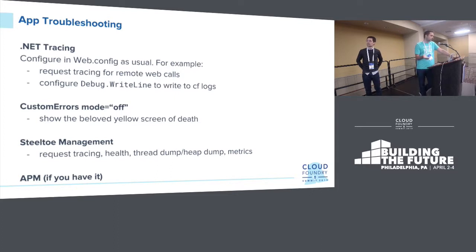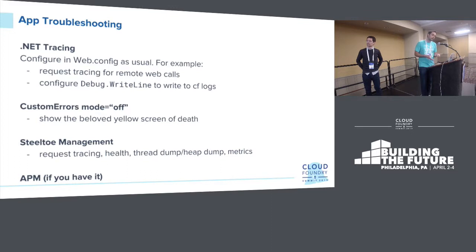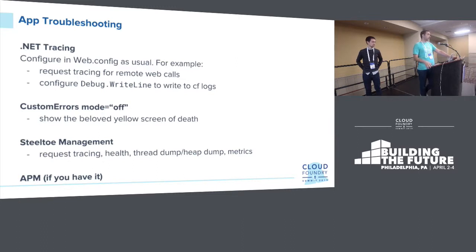If you run into problems, the typical features you'd use in IIS also work in Cloud Foundry. You can turn on .NET tracing and configure the tracing profiler to write to the console. That's useful if you're using system diagnostics tracing or libraries already instrumented in the .NET framework. For instance, if you're making a web request and wondering why it's not working properly, you can turn up the trace profiler and see the requests and responses to help diagnose issues.